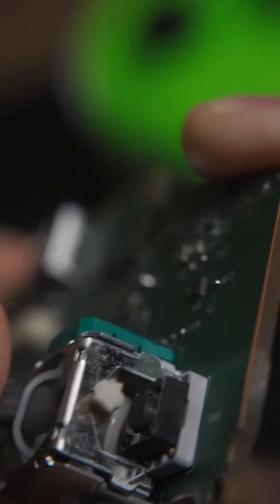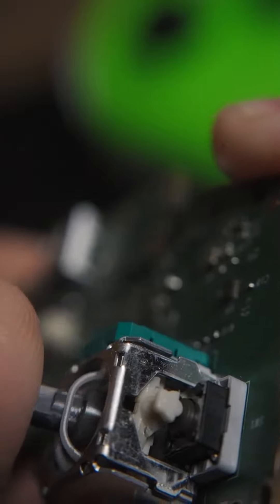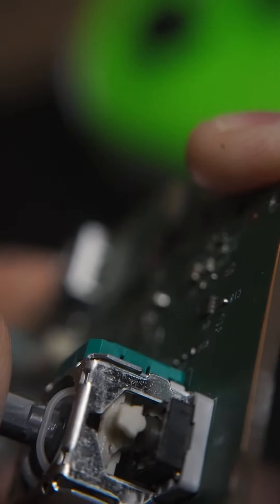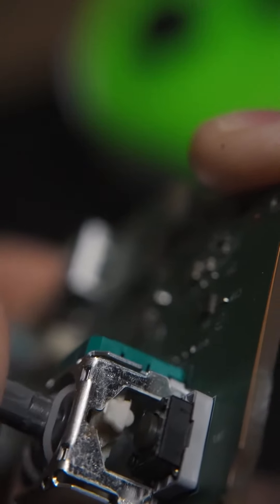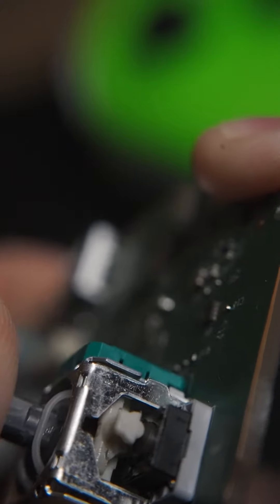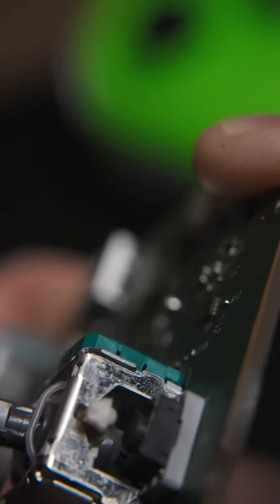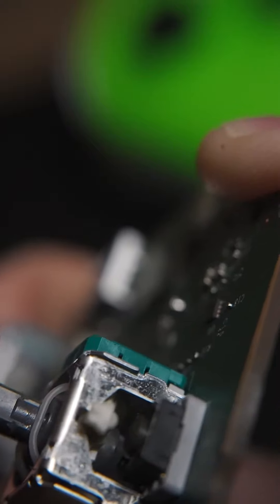So that's why we double check every single controller with our testers and technicians before we ship them out, because we don't want this to happen. You don't want that distance when you click the right thumbstick to actuate it, as compared to zero movement in that white piece there.